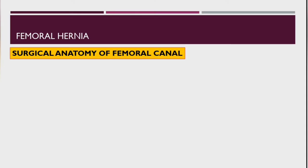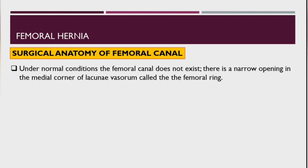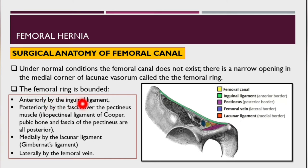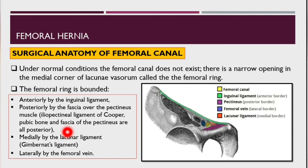Now let's look at the surgical anatomy of the femoral canal. Under normal circumstances the femoral canal does not exist — there is only a narrow opening in the medial corner of the lacuna vasorum known as the femoral ring. The femoral ring is bounded anteriorly by the inguinal ligament, posteriorly by the fascia over the pectineus muscle. The iliopectineal ligament of Cooper, the pubic bone, and the fascia of pectineus are all posterior.